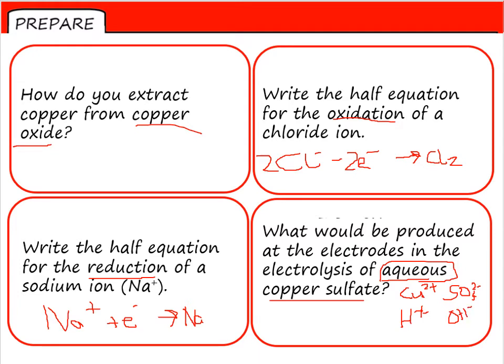So my cations, my positive ions are Cu2+ and H+. So one of these is going to be produced at the cathode, the negative electrode. And it's the least reactive. And copper is less reactive than hydrogen. So at the cathode, we get copper.